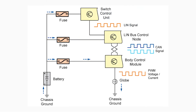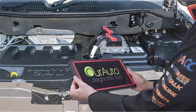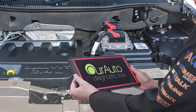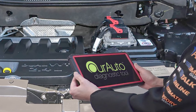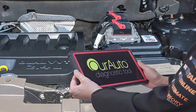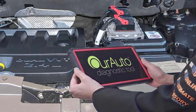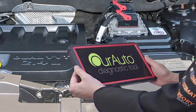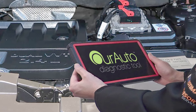To efficiently diagnose and repair these types of lighting circuits, you will need an understanding of LIN bus and CAN bus systems and a compatible diagnostic tool which can allow you to see if these signals are being sent and received by the various control units.